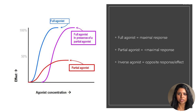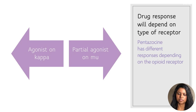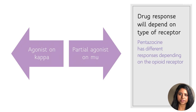This is because both drugs will compete to bind to the same receptor. Some partial agonists can behave sometimes like a full agonist, or even like an antagonist, depending upon which receptor they are using.